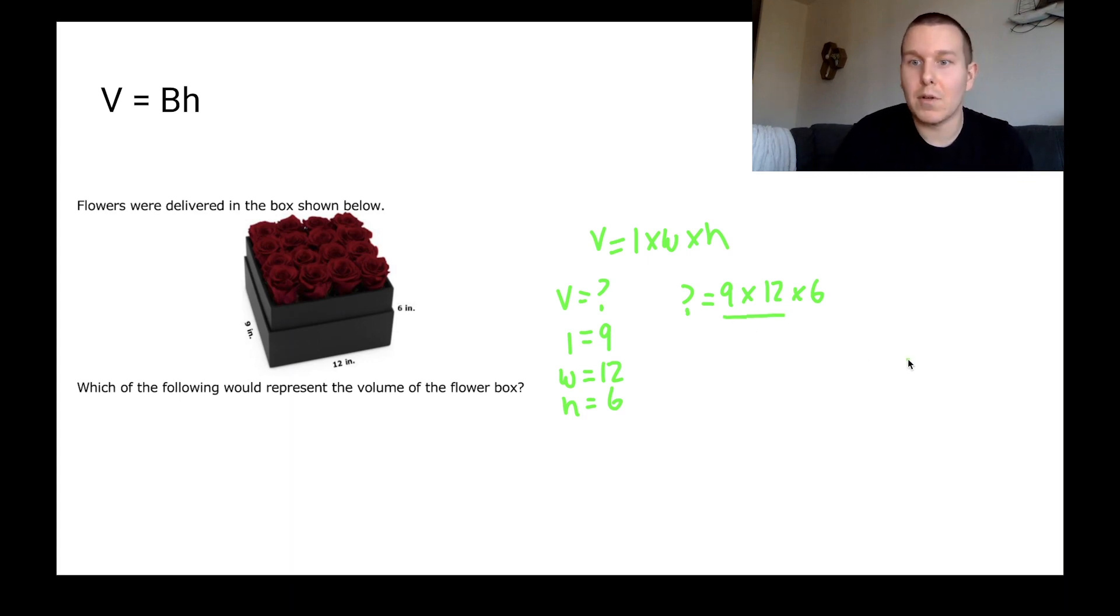So we're going to write question mark equals 9 times 12 times 6. So something we could have done is we could have rearranged the numbers to make the multiplication a little bit more friendly. But we can get through this. Okay, so 9 times 12, if I don't know that off the top of my head, I can easily come over here to the side and I can multiply those together. That's going to give me 18, and that's going to give me 10. So we get 108. So 108. And then we bring down the rest of our equation because we're high quality students. And then we do 108 times 6. We're going to multiply that. 8 times 6 will give us 48, and then 6 times 0 is 0 plus 4 is 4, and then we get a 6. So when we multiply those two together, we get 648 equals question mark.